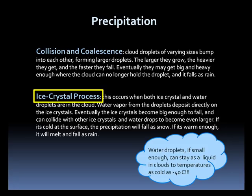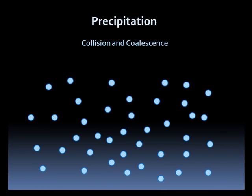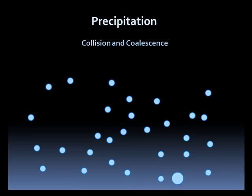Let's take a look at how the collision-coalescence process works. The blue crystals represent cloud droplets. In this process, cloud droplets run into each other, forming even larger cloud droplets. Eventually they become too heavy for the cloud to support and they fall, colliding with other cloud droplets on the way down, becoming even bigger. Eventually they will reach the ground as precipitation.